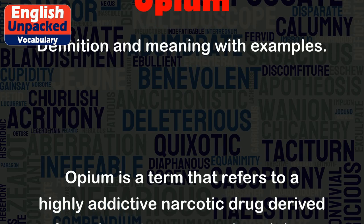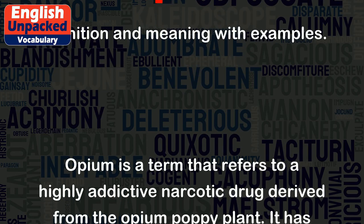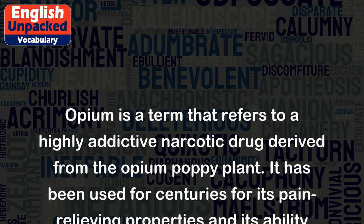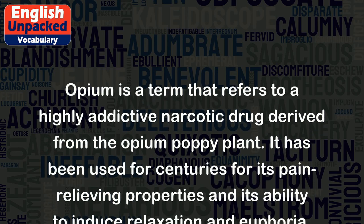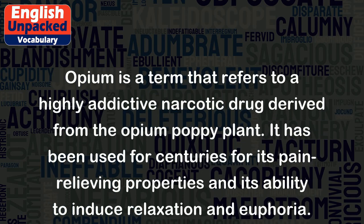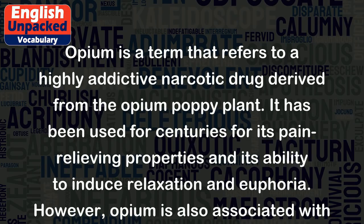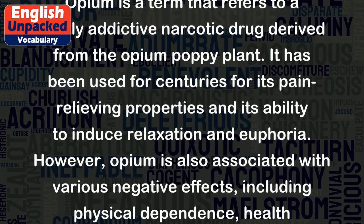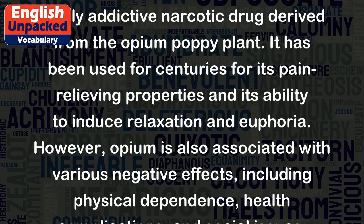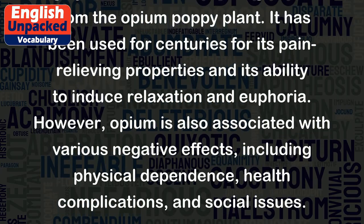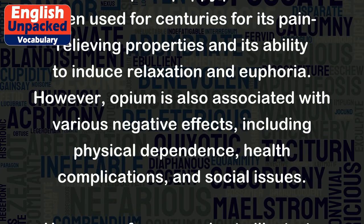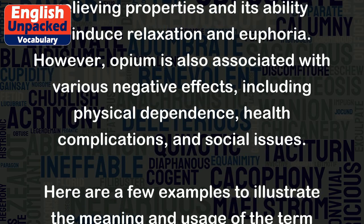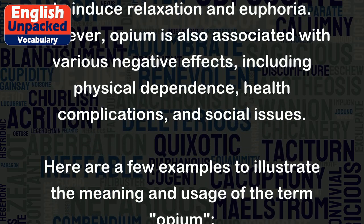Opium is a term that refers to a highly addictive narcotic drug derived from the opium poppy plant. It has been used for centuries for its pain-relieving properties and its ability to induce relaxation and euphoria. However, opium is also associated with various negative effects, including physical dependence, health complications, and social issues.